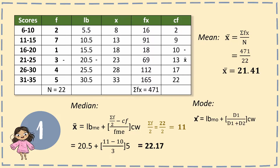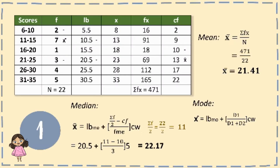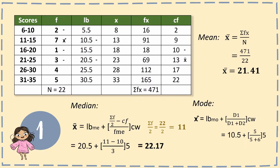Lastly, for the mode, we use the mode formula. The mode is the largest value in the frequencies, which is 7. For D1, we subtract the frequency before the modal class from 7: 7 minus 2 equals 5. For D2, we subtract the frequency after the modal class: 7 minus 1 equals 6. The class width is 5. So: 10.5 plus (5 divided by 5 plus 6) times 5 equals 12.77.